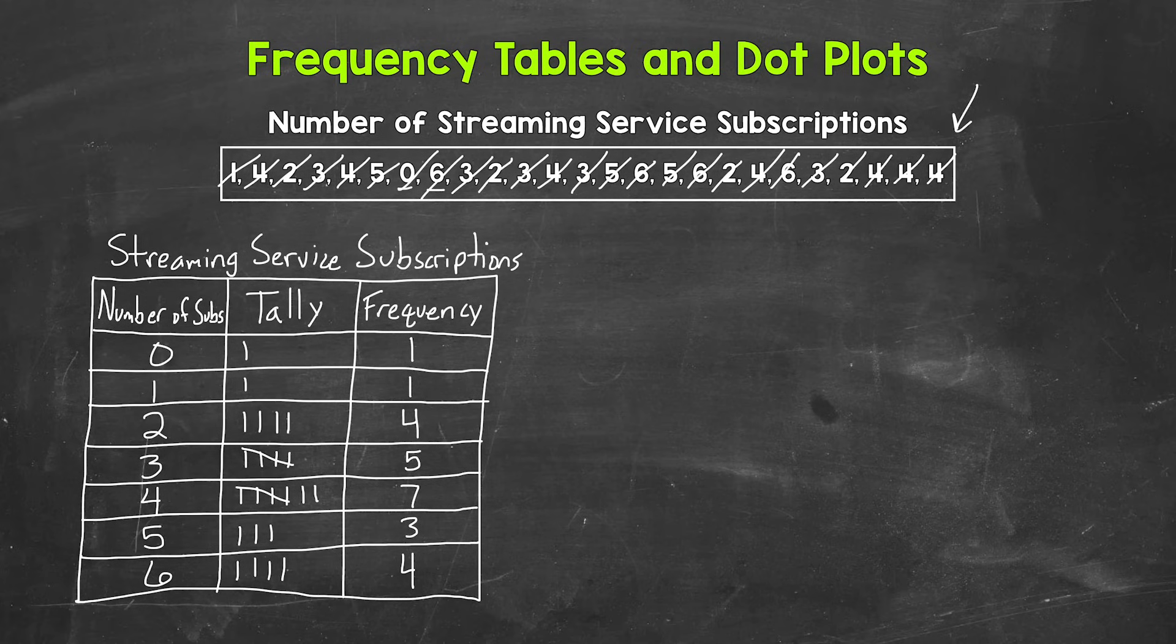Let's move on to our dot plot. Now this is another way to represent and display data. Dot plots give us a visual of the data. So our first step in making our dot plot is to draw out a number line. The number line needs to include our lowest number in value, zero. And then it needs to go all the way up to our highest number in value, six. We need to make sure to include all of the numbers within our data.